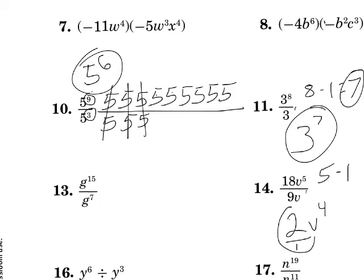Now notice this right here is 2 over 1. That's the same thing as 2. So I'm just simply going to have 2, V to the fourth. That's my answer for number 14. 2, V to the fourth.